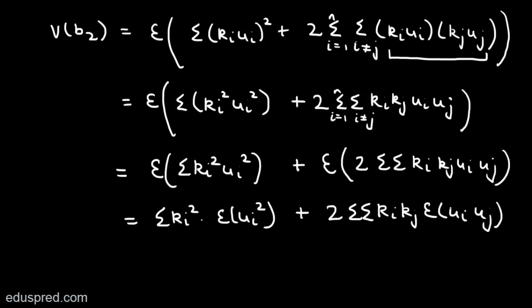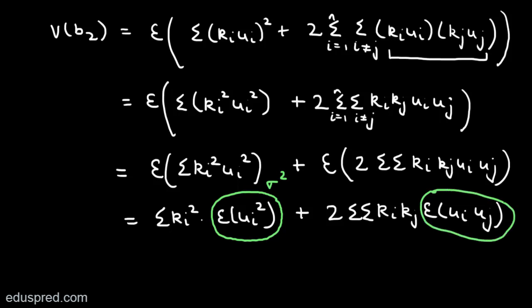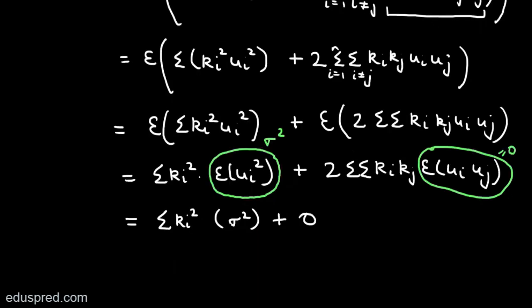Using the assumption of homoscedasticity, E[ui²] = sigma², and using the assumption of no autocorrelation, E[ui*uj] = 0 for i ≠ j. So Var(B2) = summation(ki²) * sigma² + 0. Since sigma² is a constant, we can factor it out, giving Var(B2) = sigma² * summation(ki²).